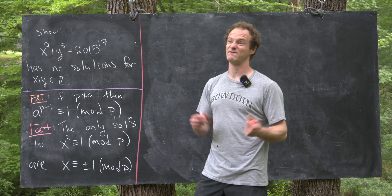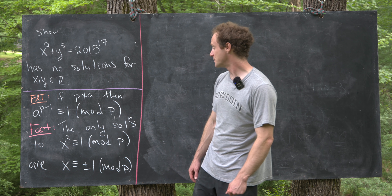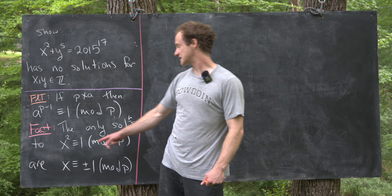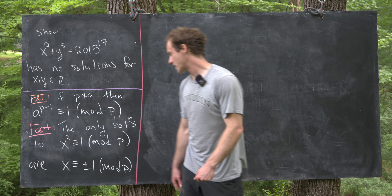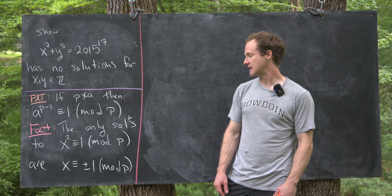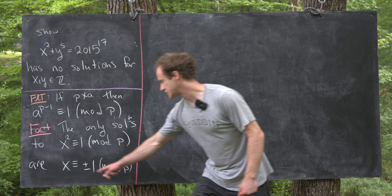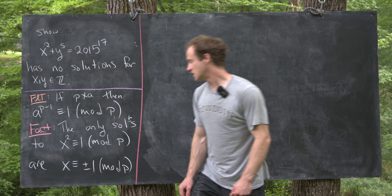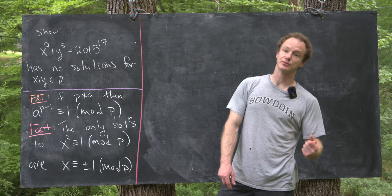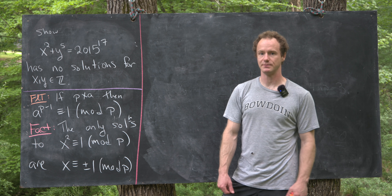And then there's this other kind of fact — I don't think it has a name — but it says that x squared congruent to 1 mod p only has solutions x congruent to plus or minus 1 mod p. So we'll make use of both of these.